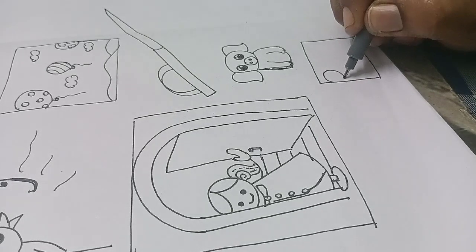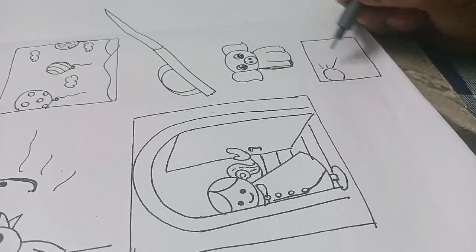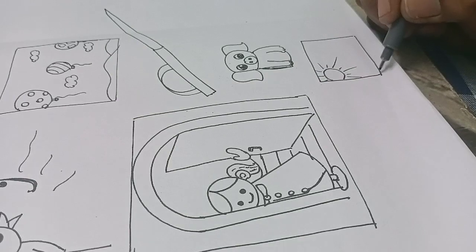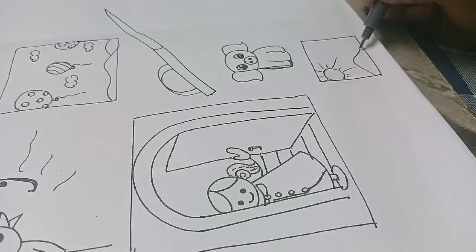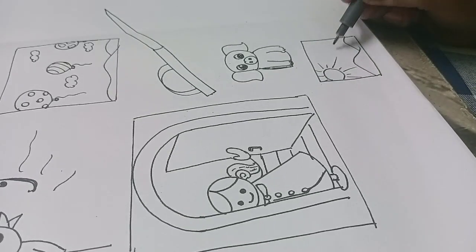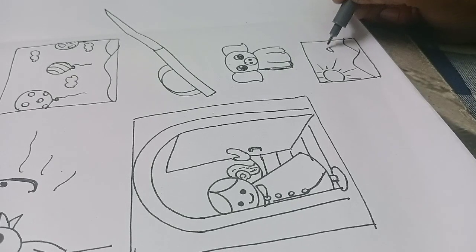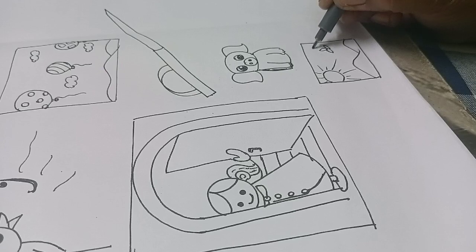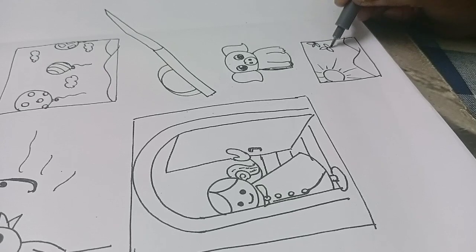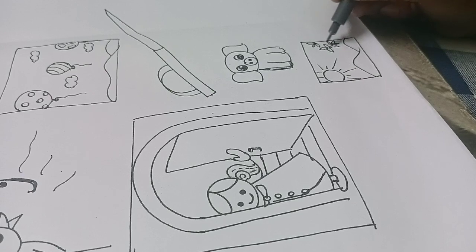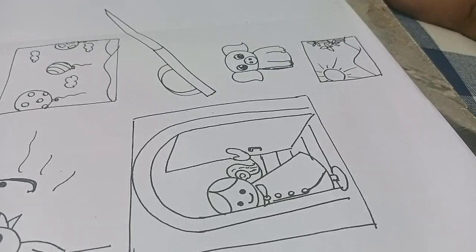Here I'm writing P. This one I'm going to make it as a sun, a small scenery, that's it. Let me color and show you.